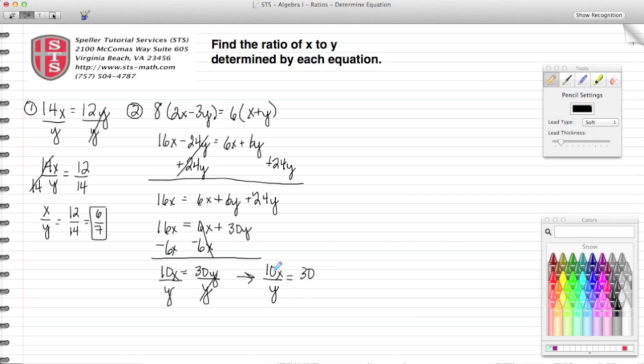Now I want to get rid of this 10, so I'm going to divide both sides by 10. 10 divided by 10 is just 1, and what this leaves me is x over y is equal to 30 over 10. Well, I can simplify 30 over 10 to 3 over 1 if I divide both of those numbers by 10.